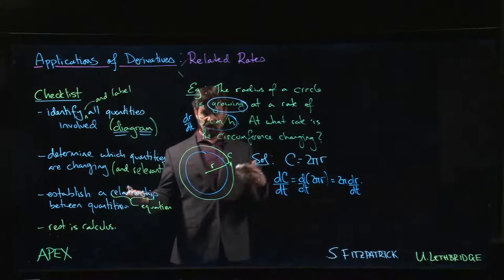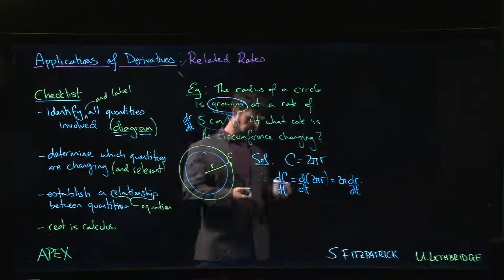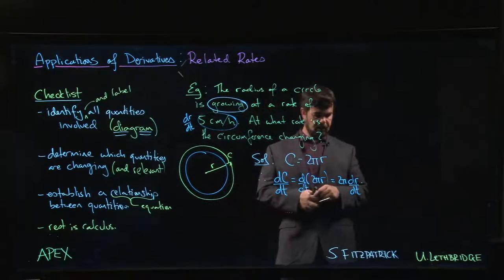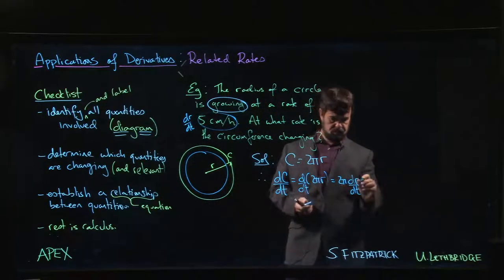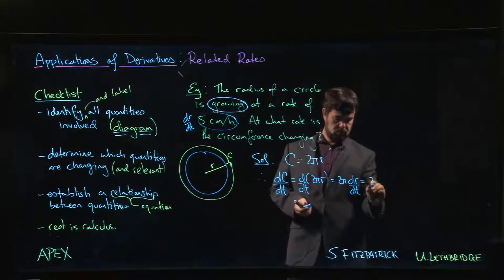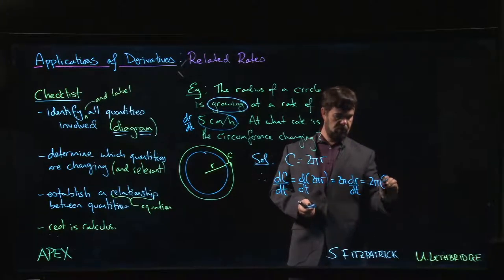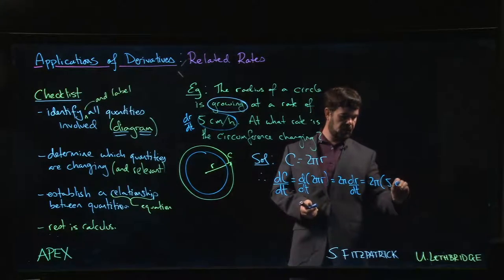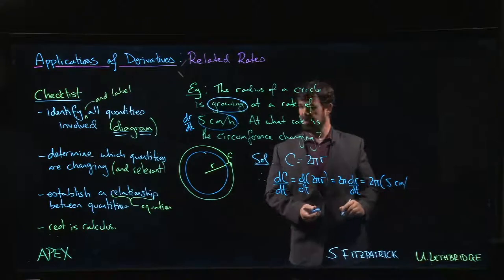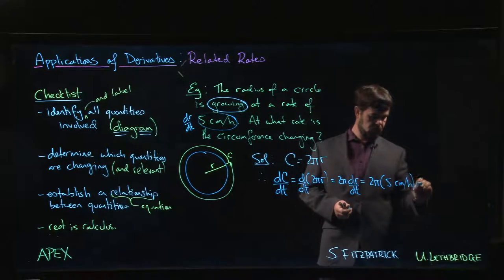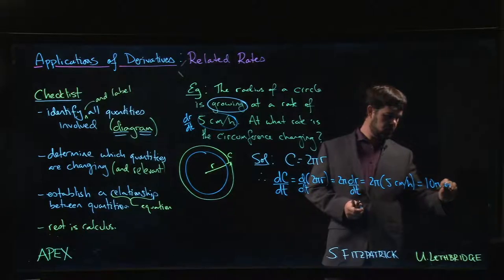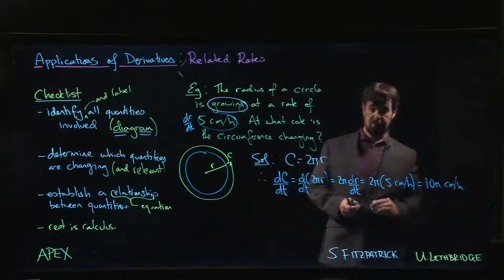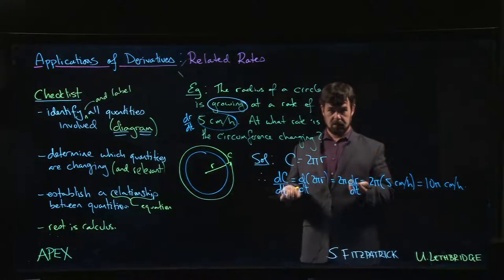Having established that, we just simply plug it in. 2π times 5 centimeters per hour equals 10π centimeters per hour. And you're done.